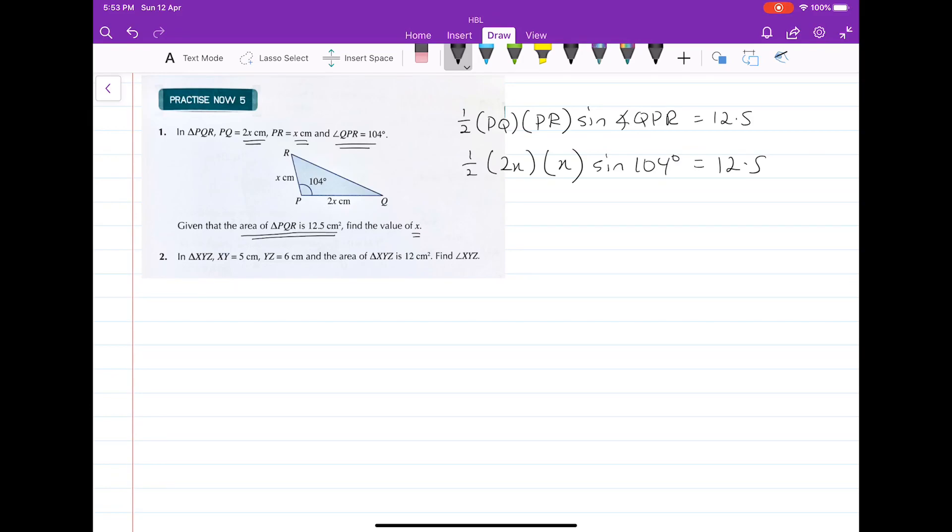In this case, the two cancels off. Let's multiply out the x. You get x squared, and sine 104 degrees equals 12.5.